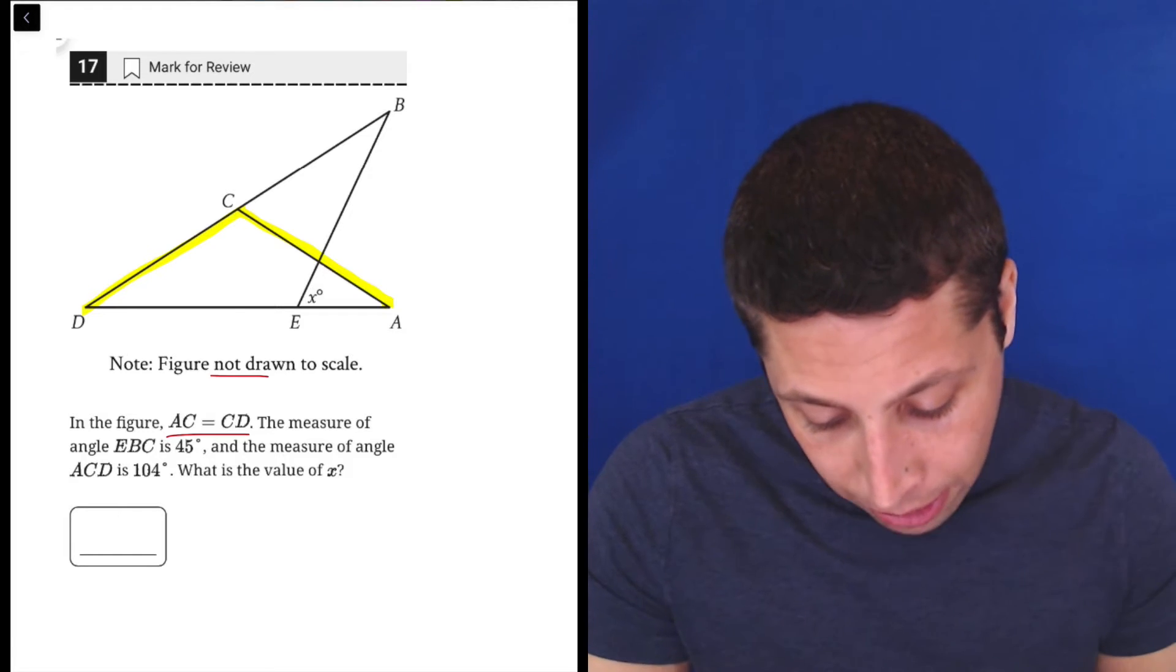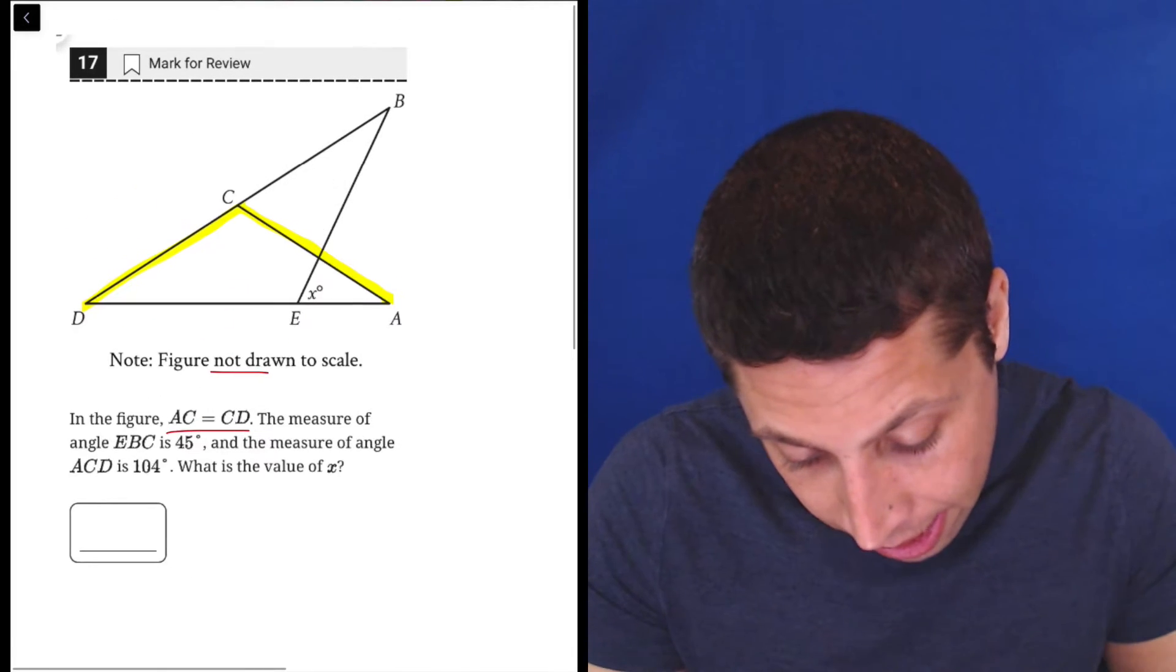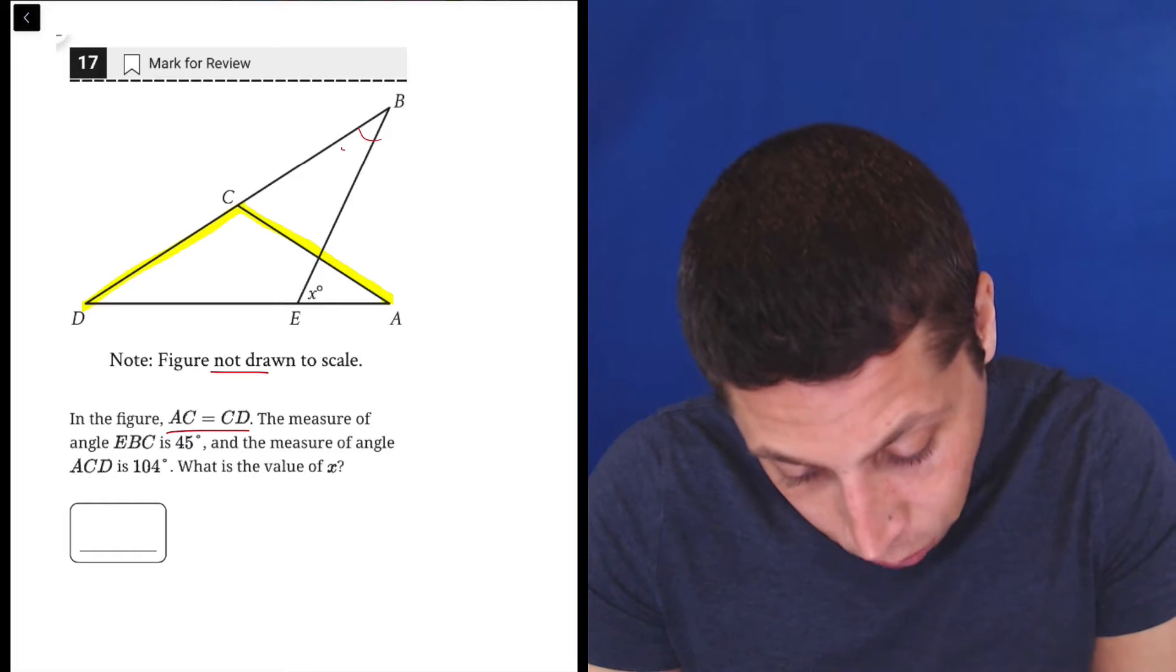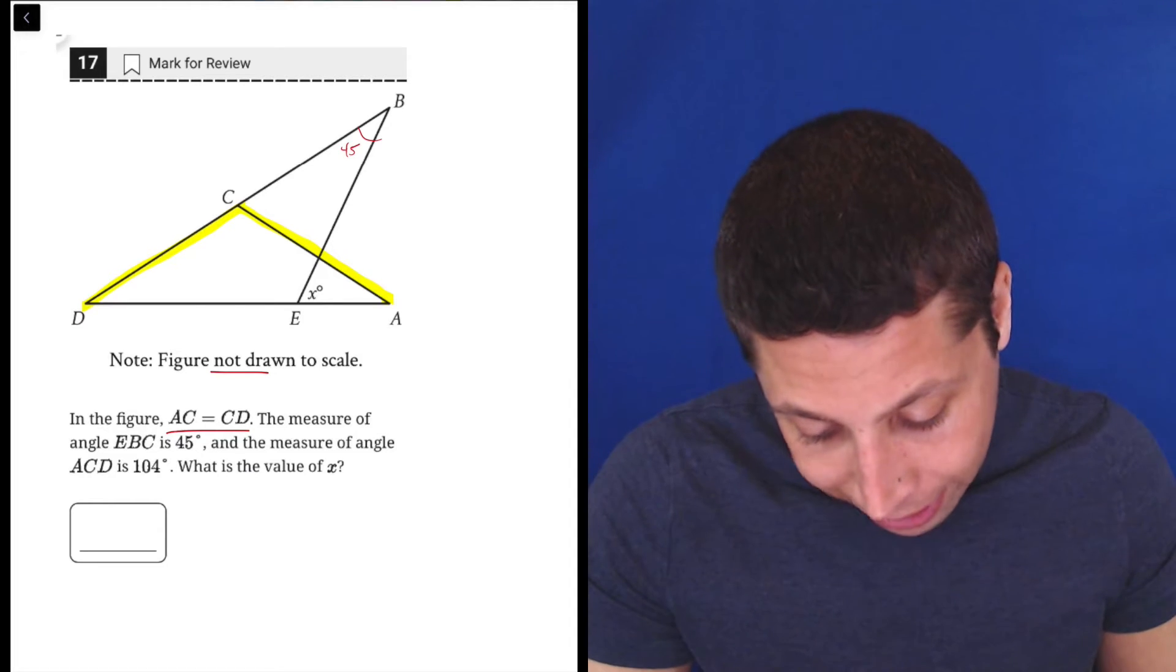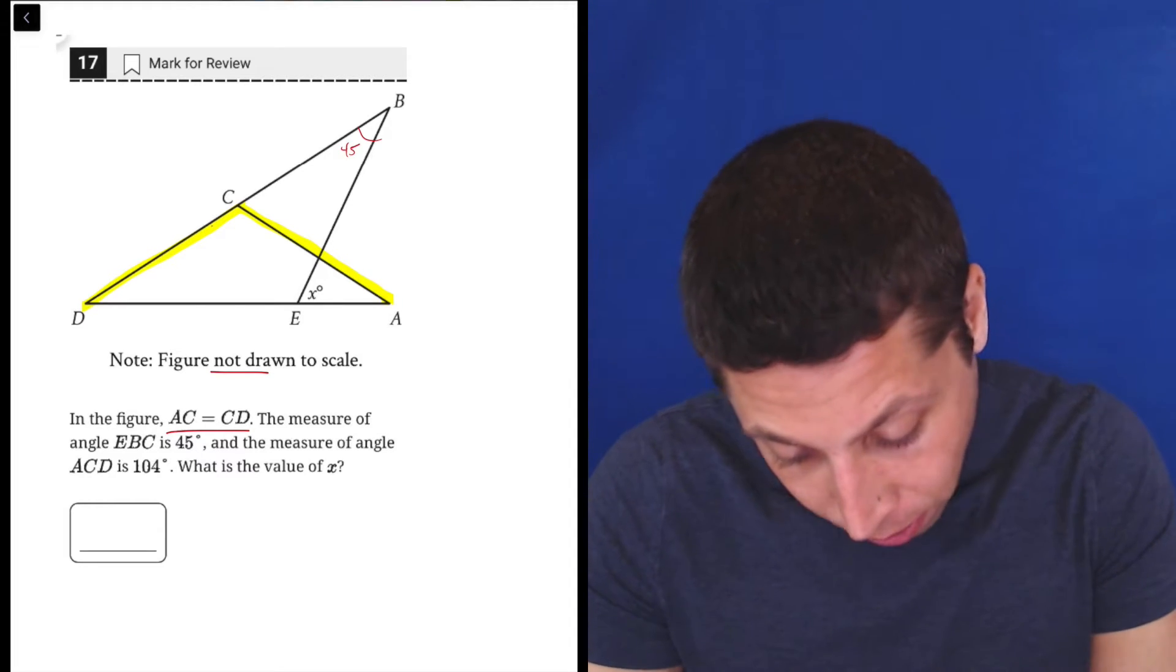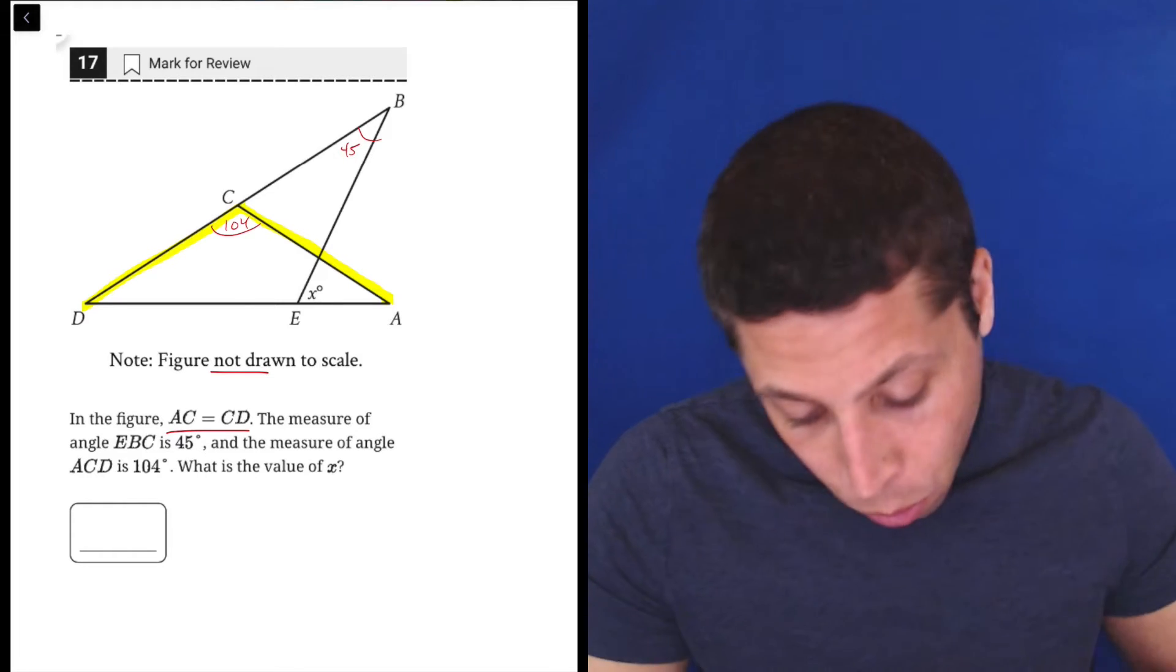And the measure of angle EBC, EBC is this guy right here, is 45. And the measure of angle ACD, so ACD is right here, that's 104. What is the value of X?